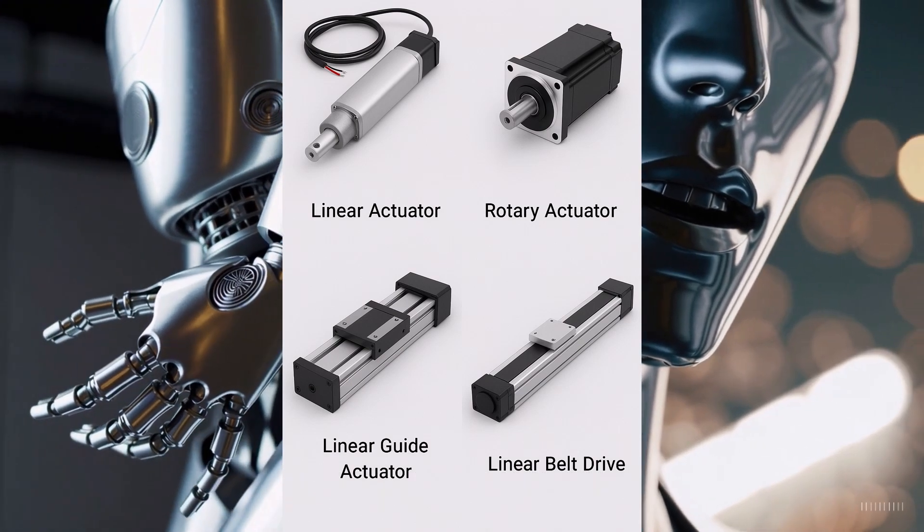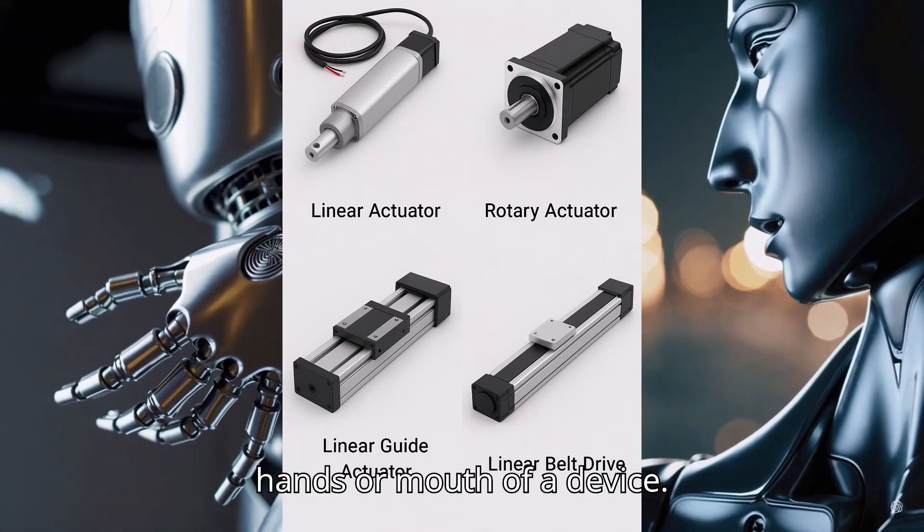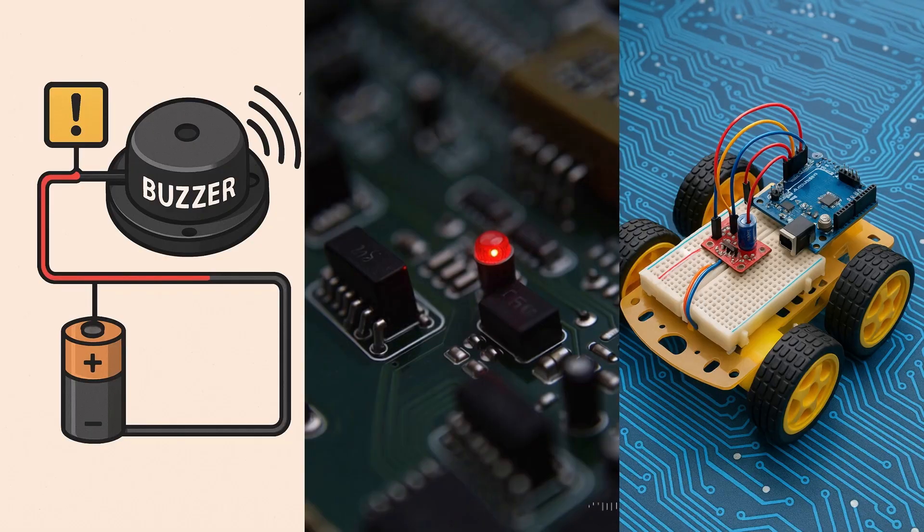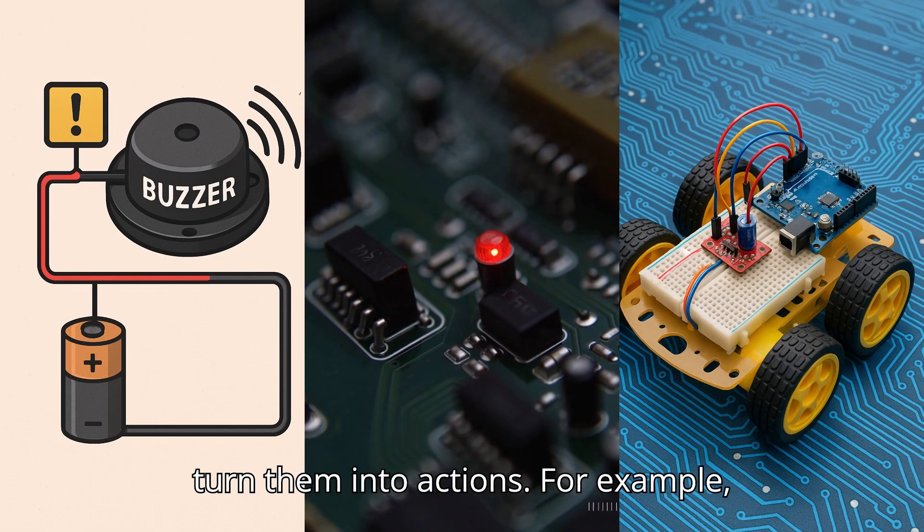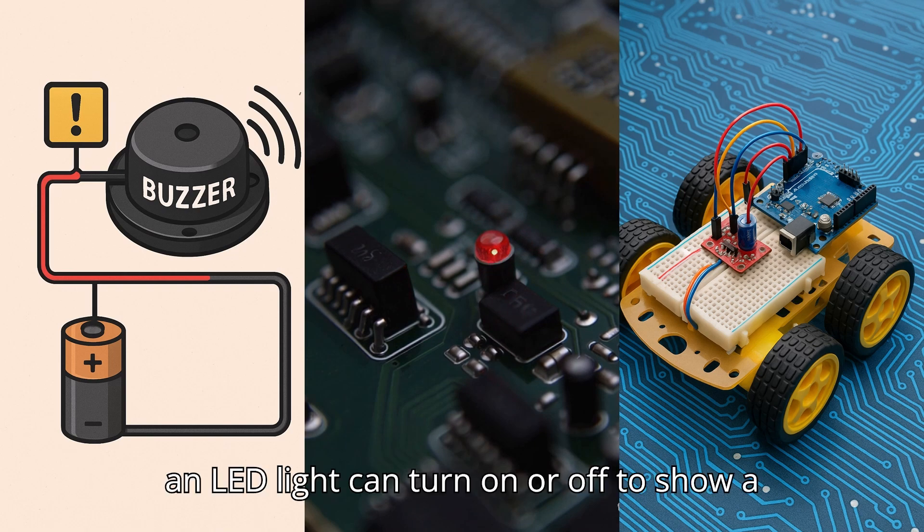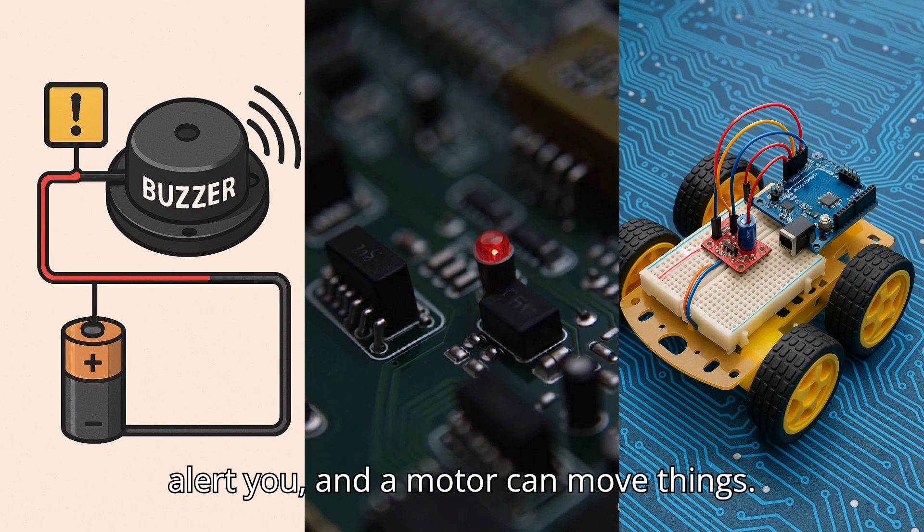Actuators are like the hands or mouth of a device. They take signals from a computer and turn them into actions. For example, an LED light can turn on or off to show a signal, a buzzer can make a sound to alert you, and a motor can move things.